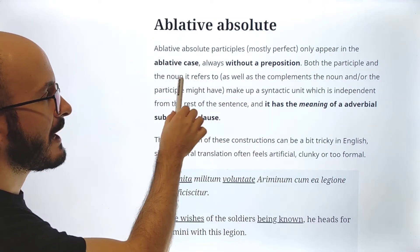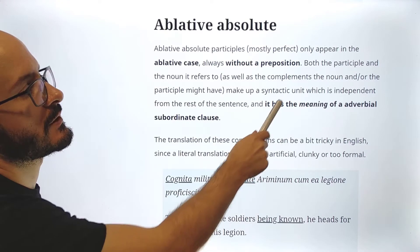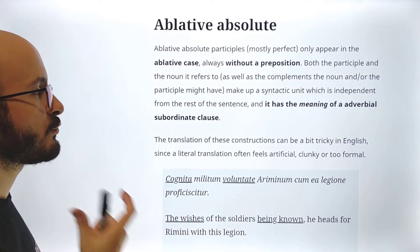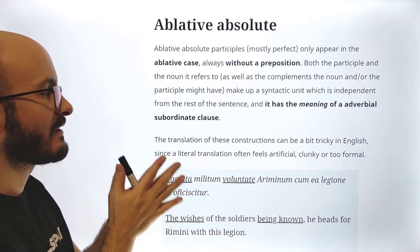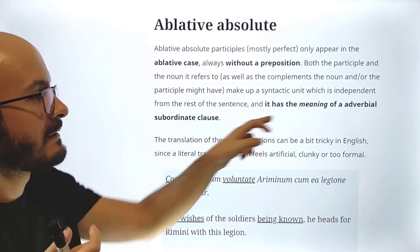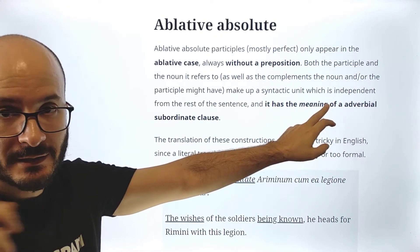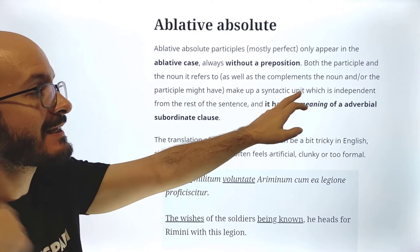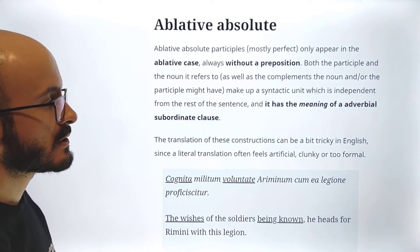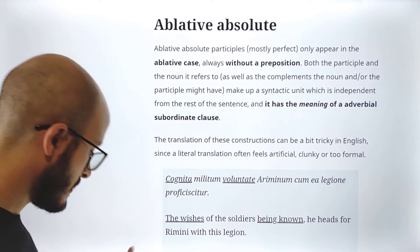Both the participle and the noun it refers to, as well as any complements the noun or the participle might have, make up a syntactic unit — a phrase — which is independent from the rest of the sentence, and it has the meaning of an adverbial subordinate clause. Note: it has the meaning of an adverbial subordinate clause, but it is not a subordinate clause. It is an independent syntactic unit. The translation of these constructions can be a bit tricky in English, since a literal translation often feels artificial, clunky, or too formal.